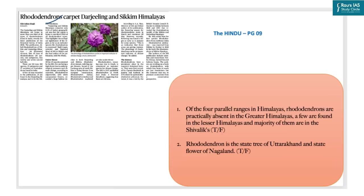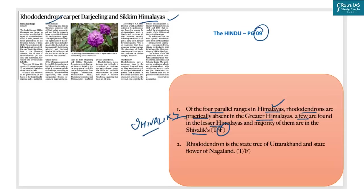Next, on rhododendrons: a Botanical Survey of India publication revealed that Darjeeling and Sikkim are home to more than one-third of all types of rhododendrons found in India. Statement 1 — that rhododendrons are practically absent in the Greater Himalayas — is incorrect; they are widely distributed in the Himalayas, practically absent in the Shivaliks, with few in the Lesser Himalayas and the majority in the Greater Himalayas. Statement 2 — that it is the state tree of Uttarakhand and state flower of Nagaland — is correct.